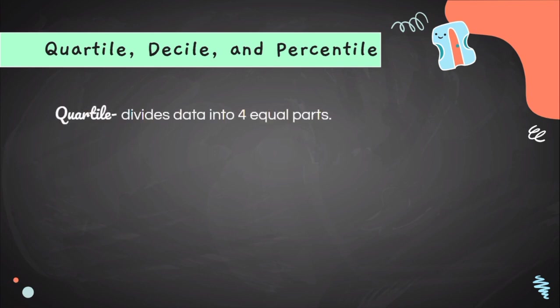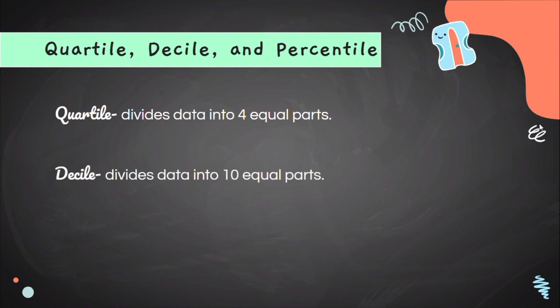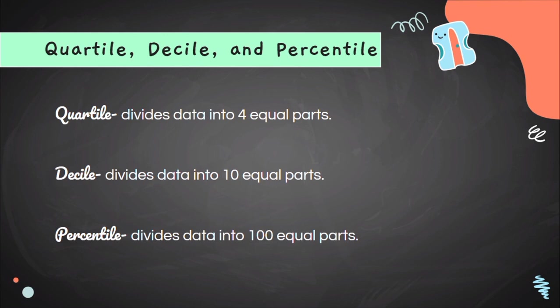Quartile divides data into 4 equal parts, while decile divides data into 10 equal parts, and percentile divides data into 100 equal parts.